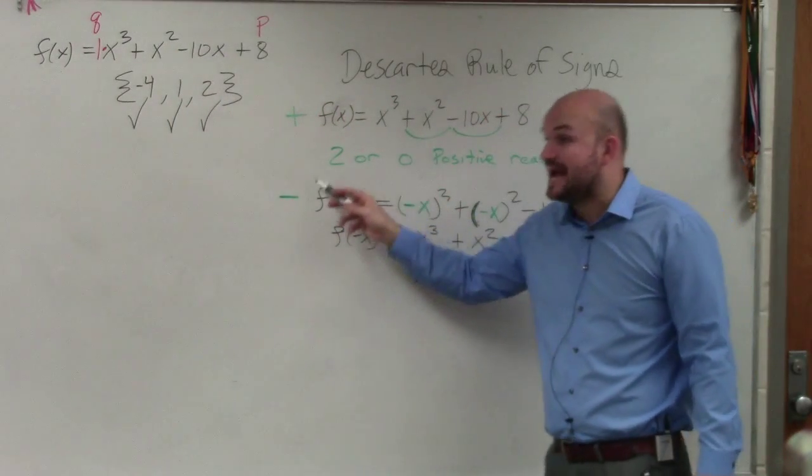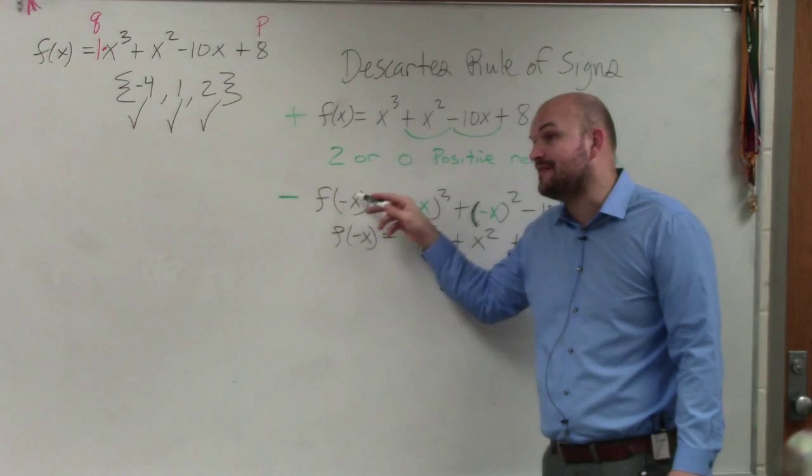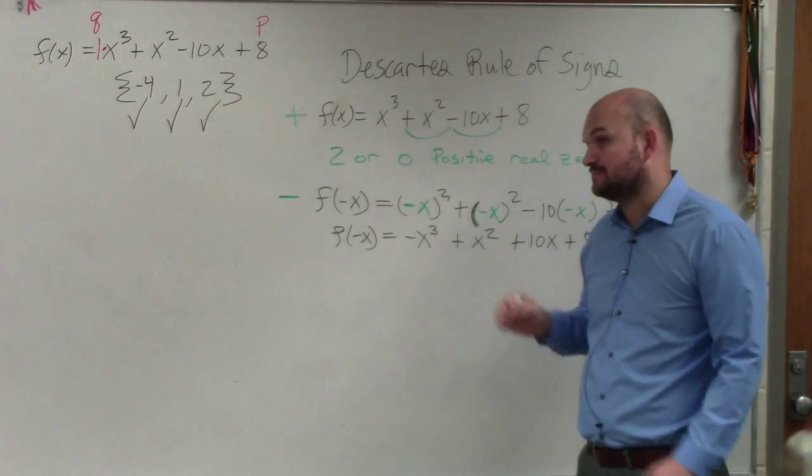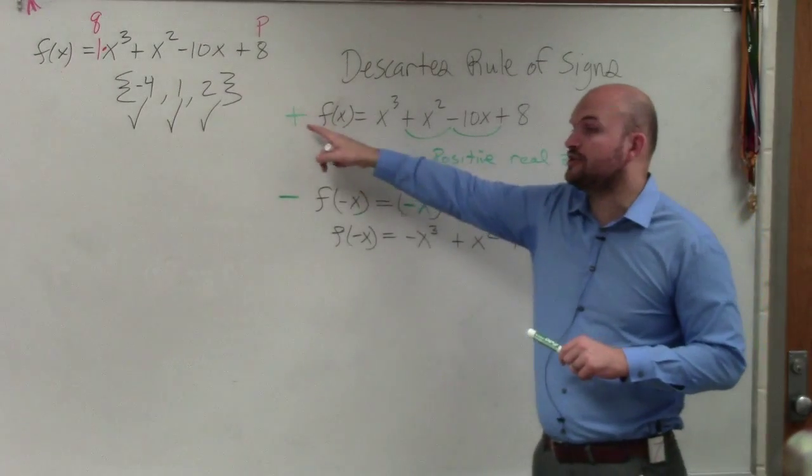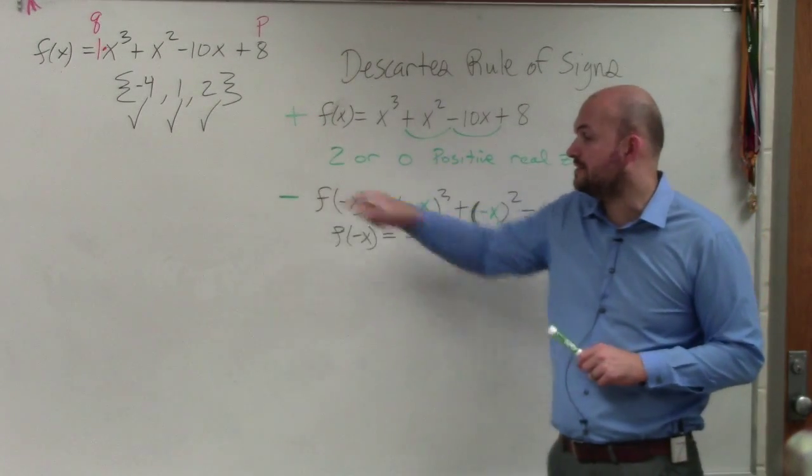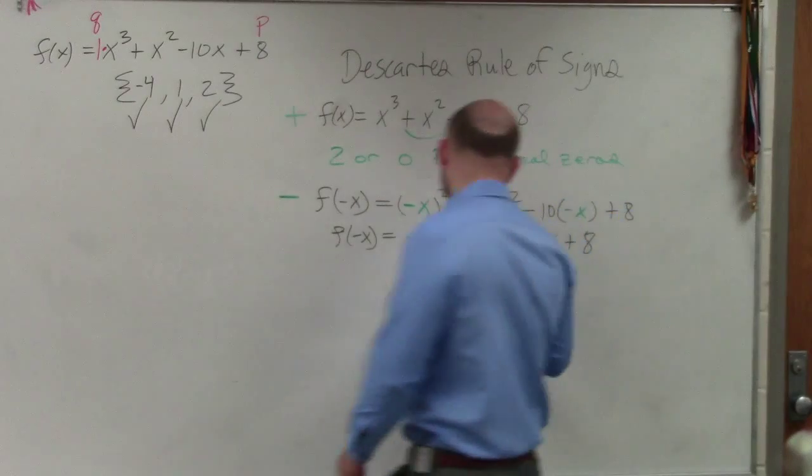All you do is you just take the number of sign changes. To find the number of negative, you have to plug in f(-x) and simplify it. Okay, so the green negative next to the x is not. No, that just represents are you finding positive or are you finding negative?